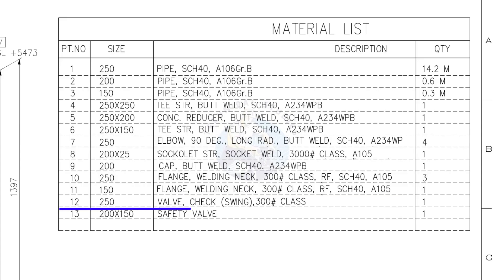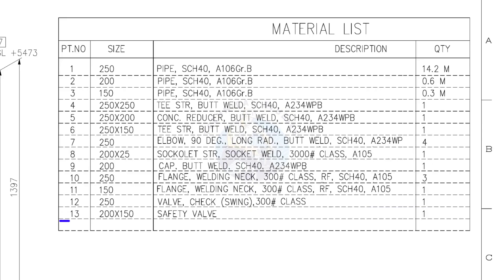Item number 12: 250 NB check valve, swing type, class 300 pound. Quantity 1. Item number 13: 200 into 150 safety valve. Quantity 1.